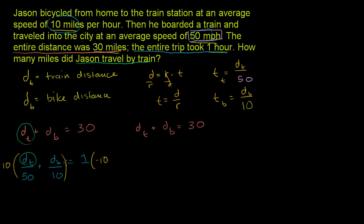Multiplying the second equation by negative 10: negative 10 times dt over 50 gives negative one-fifth dt. And negative 10 times db over 10 — the 10s cancel — gives negative db. The right-hand side becomes negative 10. Now when we add the two equations, the db terms will cancel out.